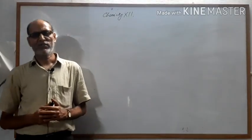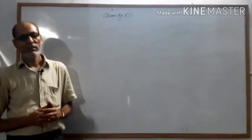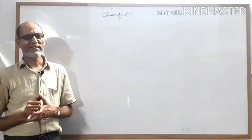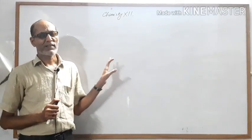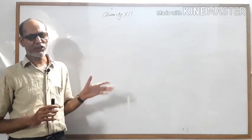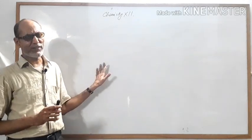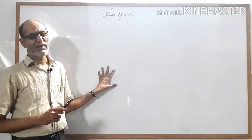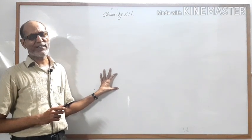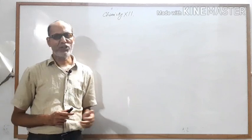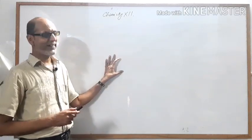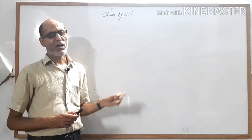Good evening students. Today we will discuss the classification of carbohydrates. Yesterday I explained the classification on the basis of taste — sugar and non-sugar — and classification on the basis of hydrolysis. There were three types of carbohydrates on the basis of hydrolysis: monosaccharides, oligosaccharides, and polysaccharides. We have already explained monosaccharides, and now we are moving towards oligosaccharides.